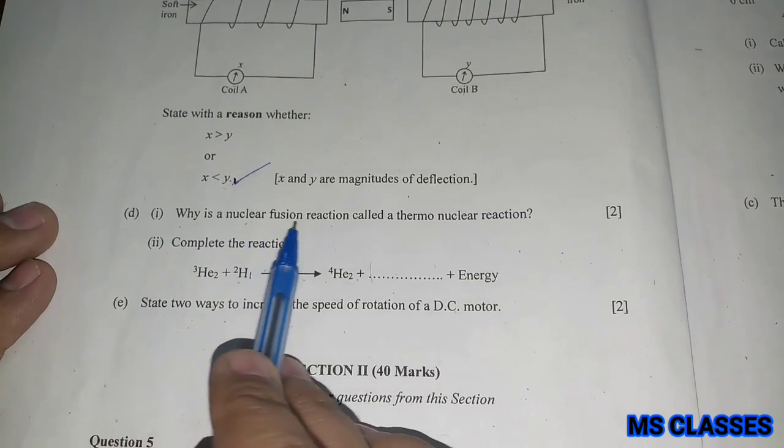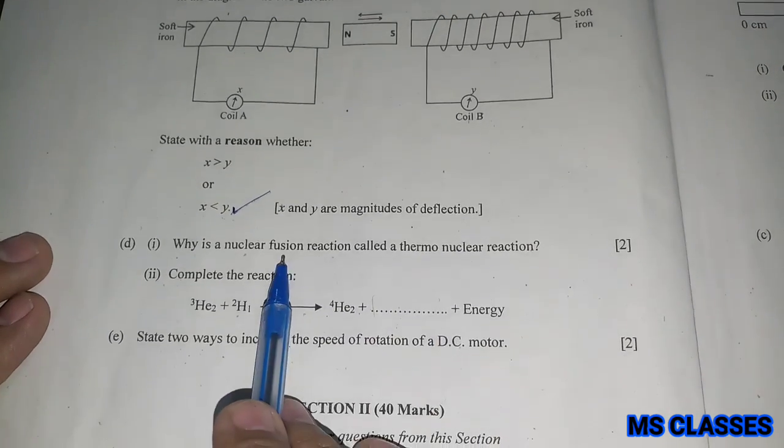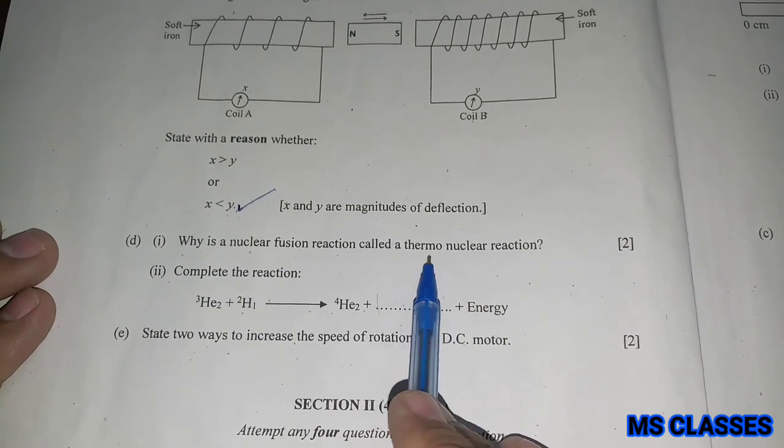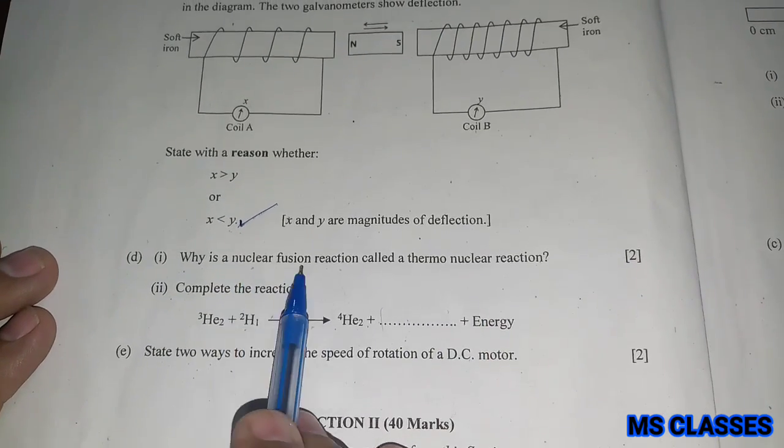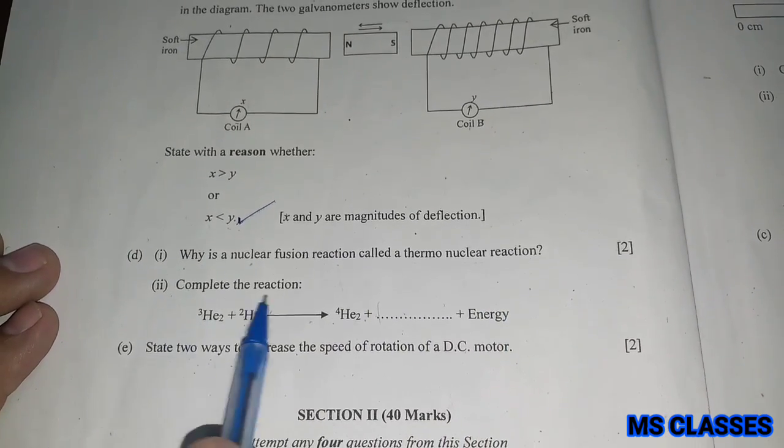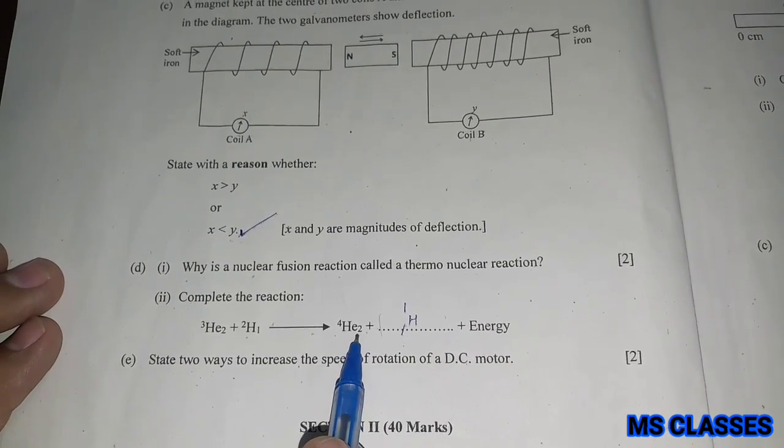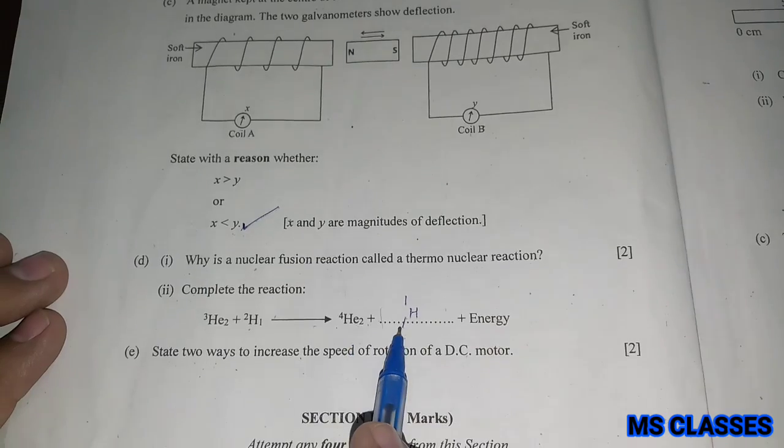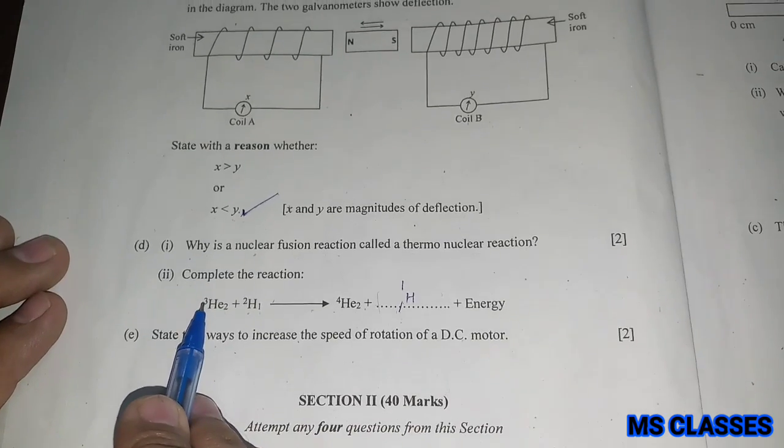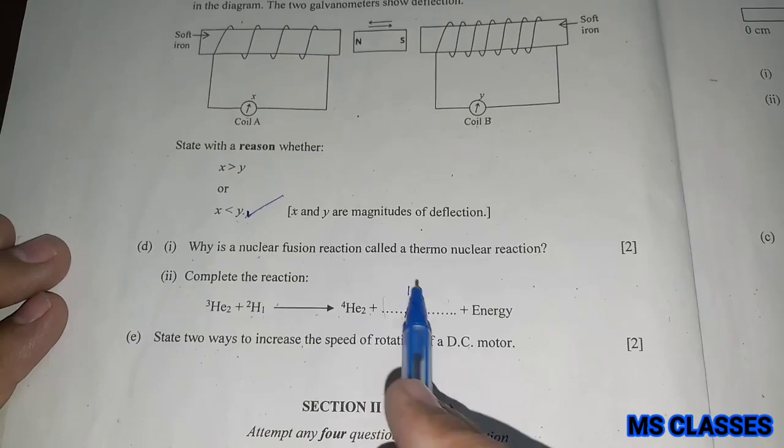Why is a nuclear fusion reaction called a thermonuclear reaction? Because here you can see that a large amount of heat energy is required to initiate the reaction. So thermal means the heat energy, nuclear means nuclear fusion. That's why it is called thermonuclear reaction. Complete the reaction. So here this would be 1H1 because if you add the atomic number, you get 2 plus 1 equals 3, even here also 2 plus 1 equals 3. And if you check the atomic masses, this would be 3 plus 2 equals 5, and 4 plus 1 equals 5. So hence proton would be our answer.